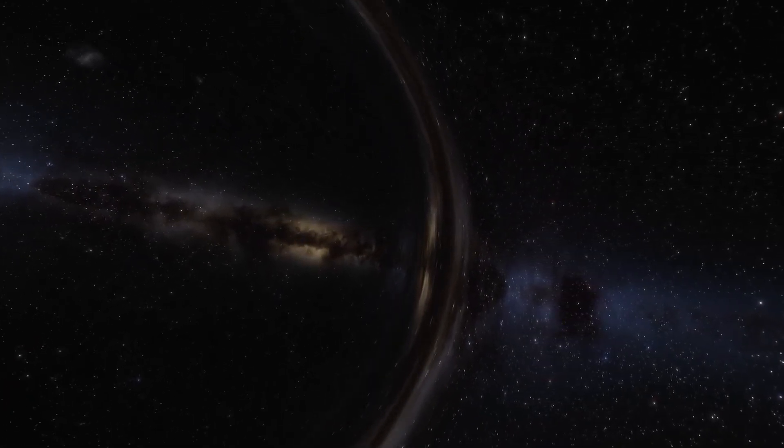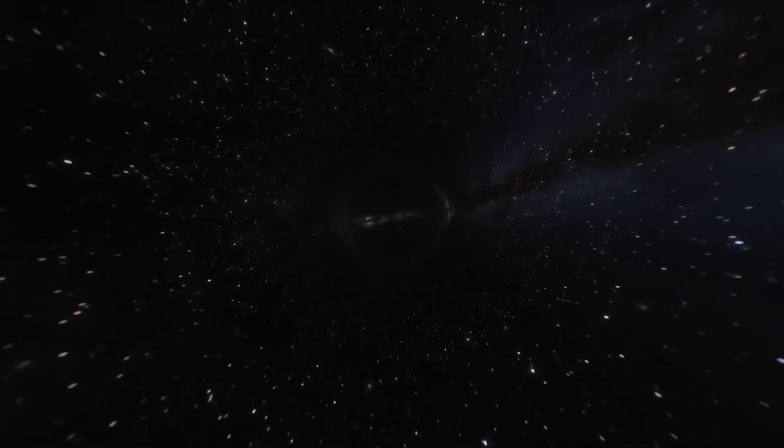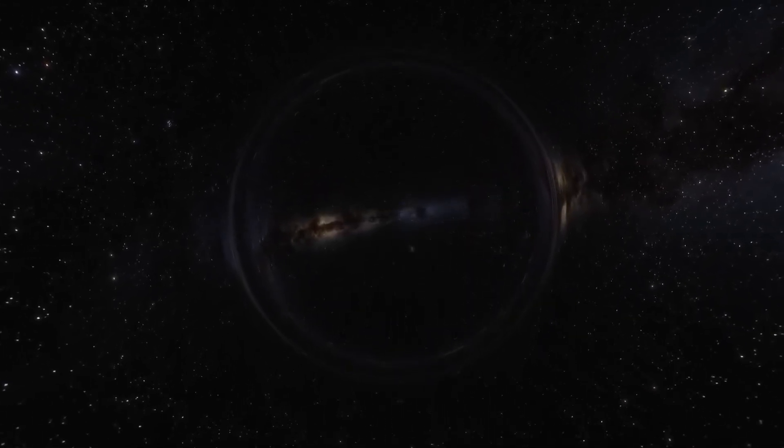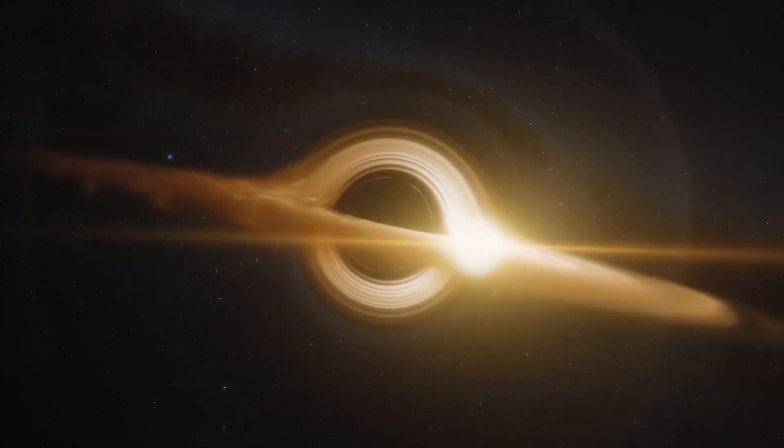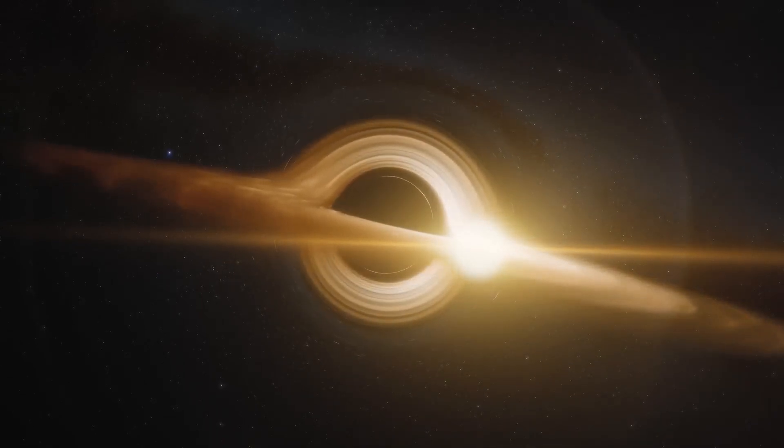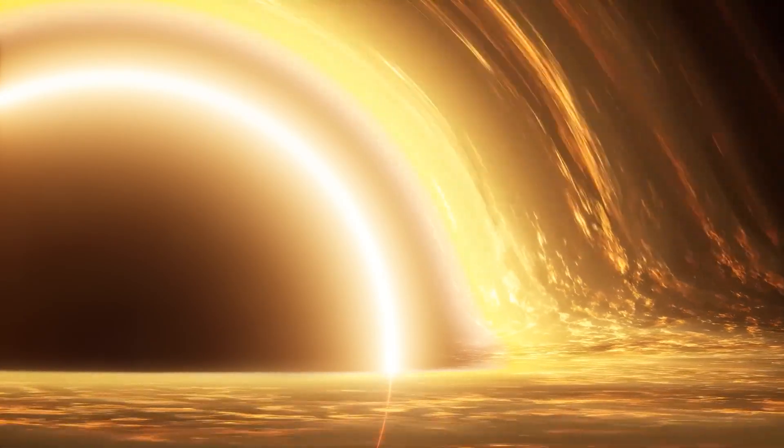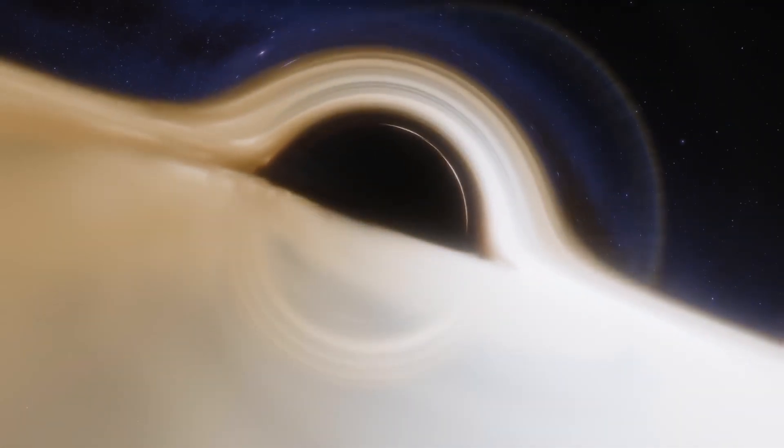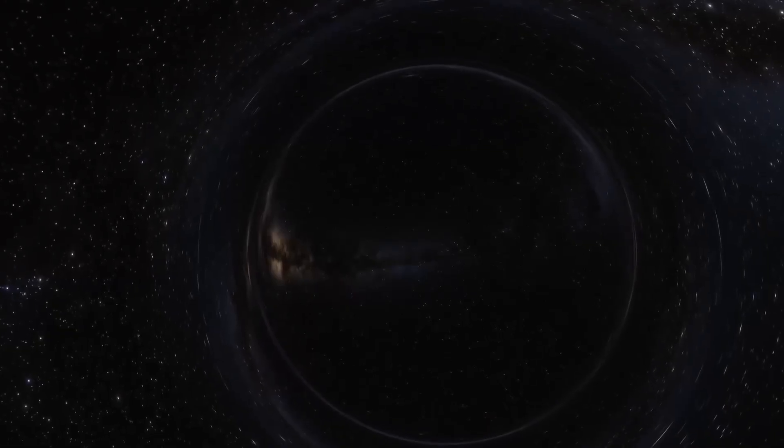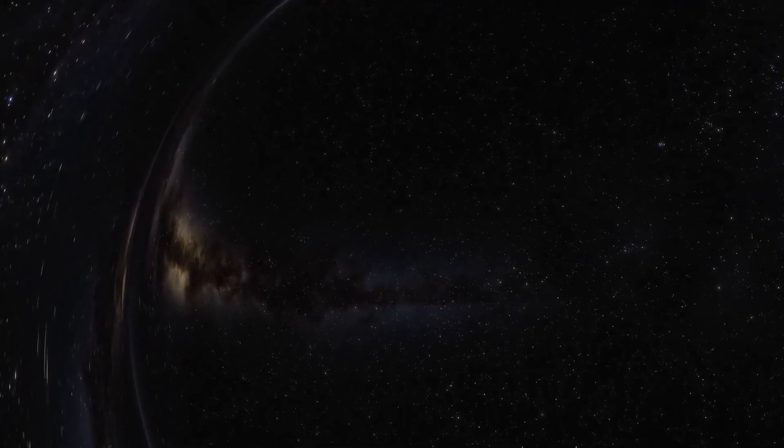But how exactly could our universe exist inside a black hole? Let's simplify this complex idea. Black holes aren't just dark pits. They are incredibly dense objects where gravity is strong enough to bend space and time. If a black hole rotates, it creates a region called a Kerr black hole, which might contain wormholes, hypothetical tunnels connecting different universes. This means our universe might have started as the inside of a black hole, created from the collapse of a star in another universe.